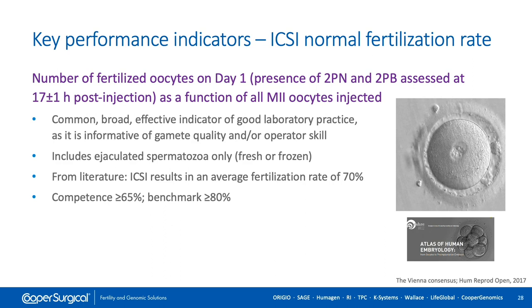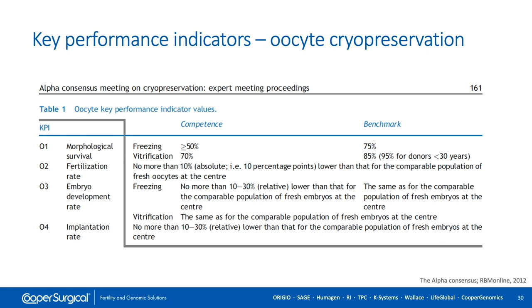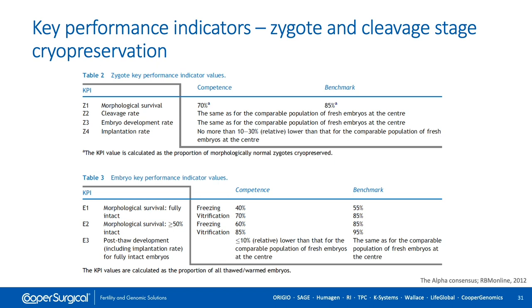Other key performance indicators include the development rate on day 2 and day 3 as a function of normally fertilized oocytes, with competency and benchmark values defined. The Alpha consensus also covers KPIs for oocyte cryopreservation — survival rate, fertilization rate, development rate, and implantation rate — always compared to the fresh population. For embryo cryopreservation, similar KPIs apply: morphological survival rate, cleavage rate, embryo development rate, and implantation rate compared to fresh embryos. For blastocysts — whether slow freezing or vitrification — survival rate, transfer rate, and implantation rate are suggested.